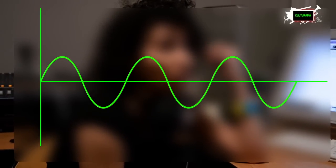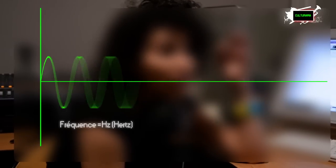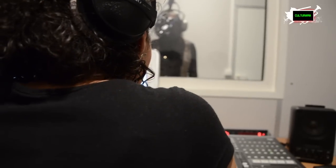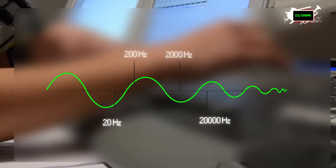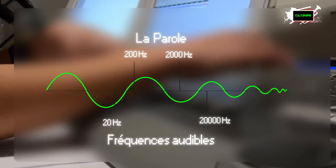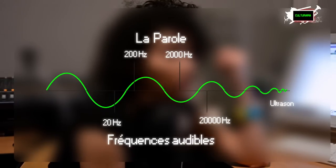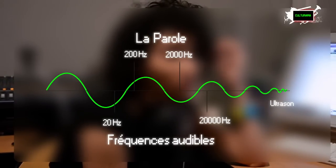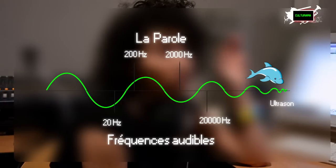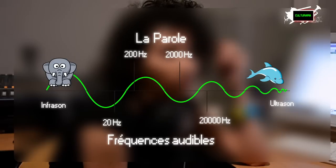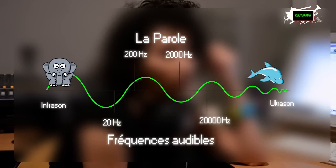Un son, ça se définit par sa fréquence, bien sûr, qui est exprimée en Hertz, mais aussi par son amplitude, qui est exprimée en décibels. C'est ce qui définit la hauteur d'un son. On sait que l'oreille humaine, elle entend les sons. L'homme entend des fréquences de 20 Hertz à 20 kilohertz. Au-dessus de 20 kilohertz, on appelle ça des ultrasons, mais les ultrasons, on ne peut pas les entendre — il n'y a que les dauphins qui les entendent. C'est comme les infrasons, en dessous de 20 Hertz : c'est tellement grave que tu ne peux pas entendre. C'est ce qui définit un son.